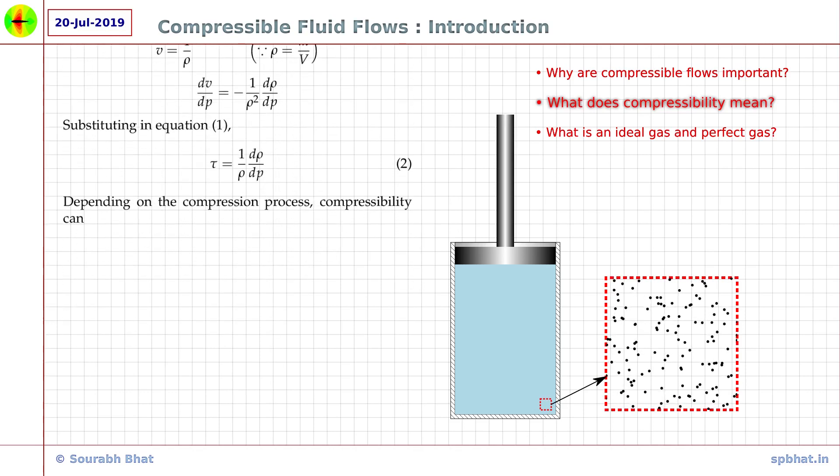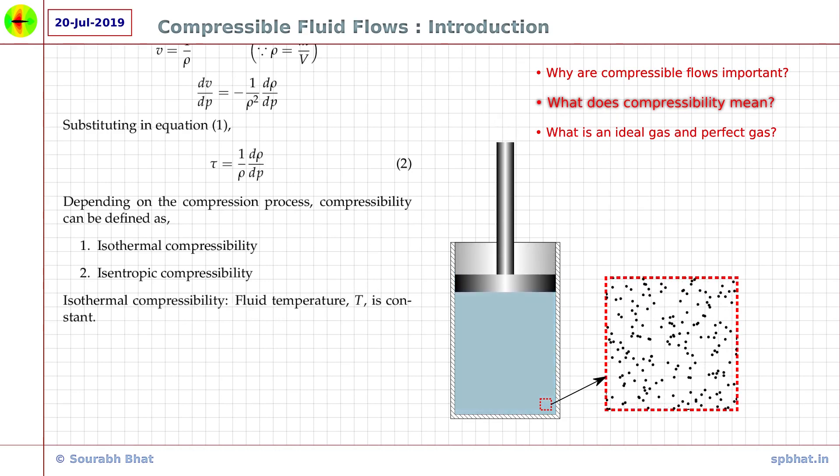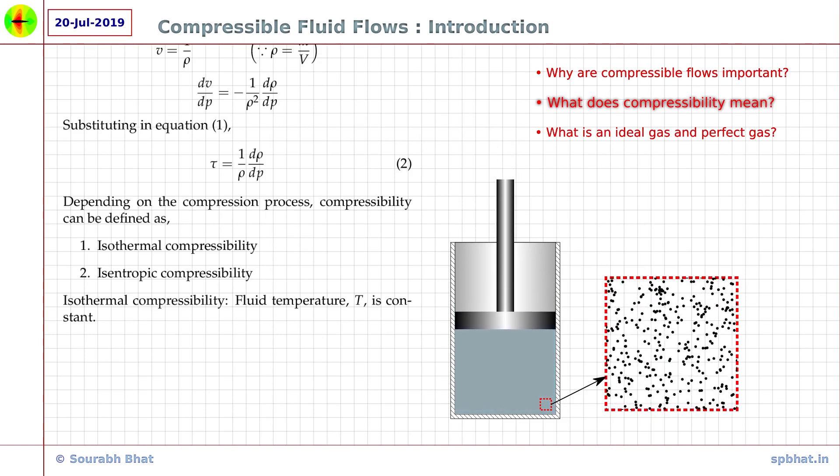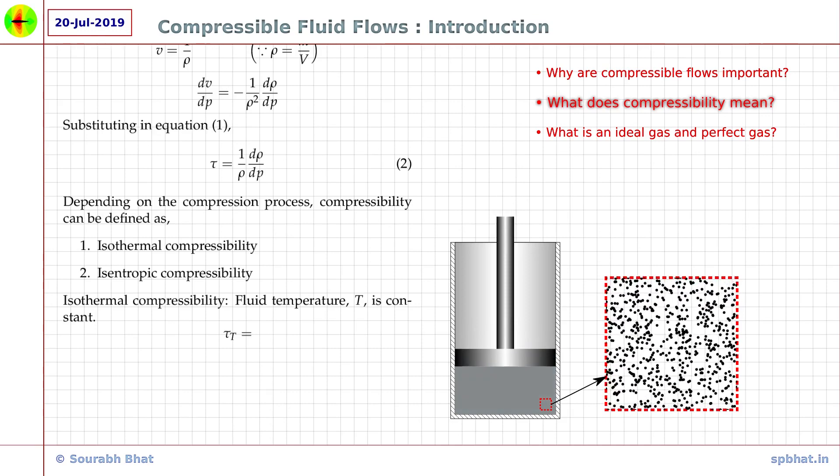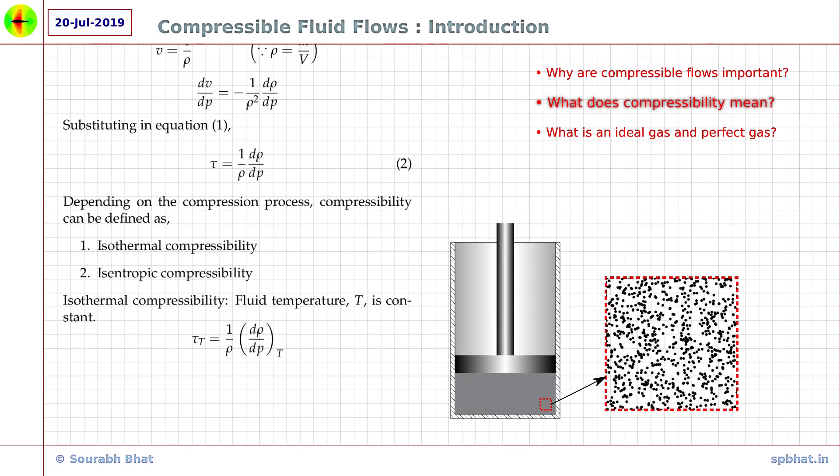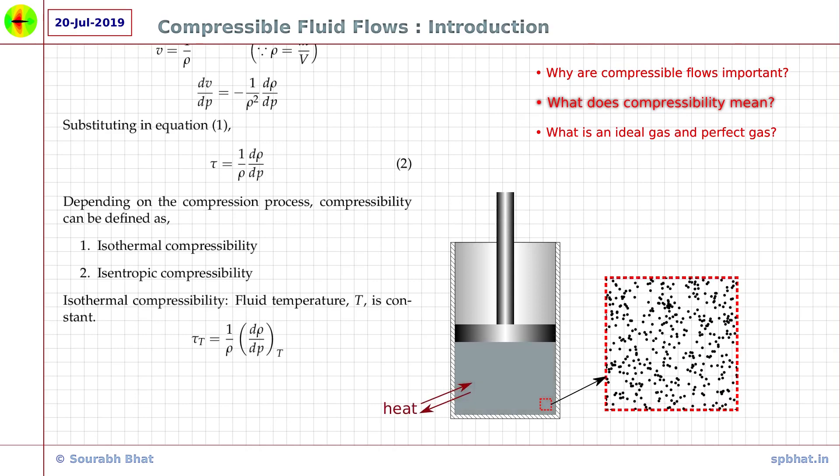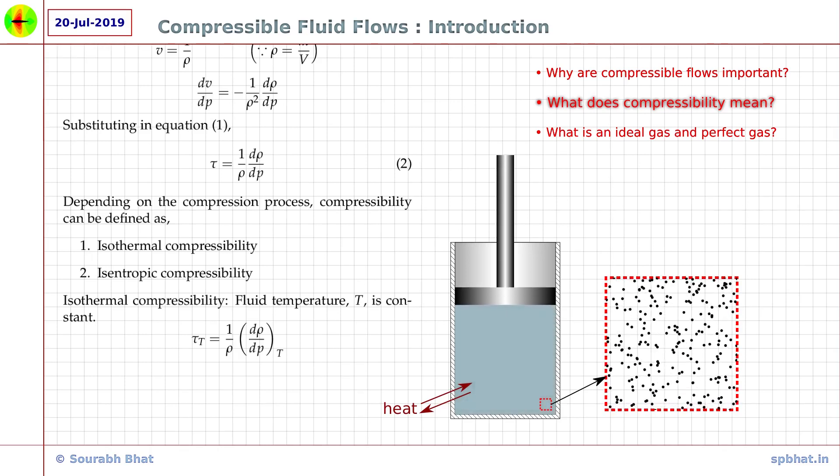The two different definitions of compressibility are isothermal compressibility and isentropic compressibility. The compressibility of the fluid when the compression process takes place with constant temperature is known as isothermal compressibility and is written with subscript t. It is therefore mathematically written as tau with subscript t is equal to 1 over rho d rho by dP with subscript t. This process occurs when heat is allowed to flow through the walls of the cylinder and piston, such that the temperature remains constant inside the cylinder.